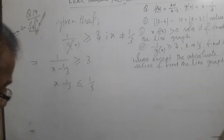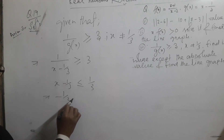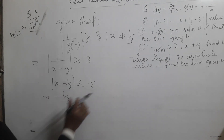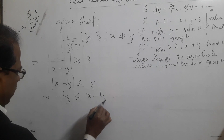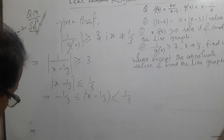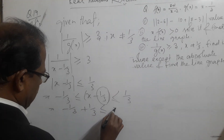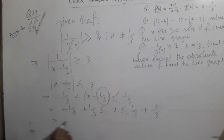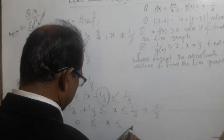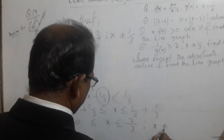This is the system. That implies minus 1/3 is less than or equal to x minus 1/3, less than or equal to 1/3. This is the real numbers format. So that means: minus 1/3 plus 1/3 is less than or equal to x, less than 1/3 plus 1/3. That implies 0 is less than or equal to x, less than or equal to 2/3. And importantly, x is not equal to 1/3.